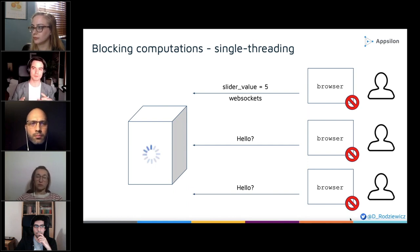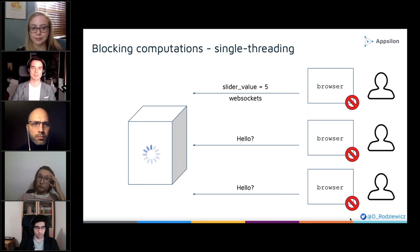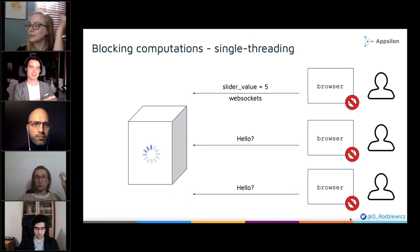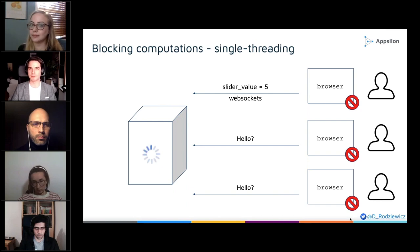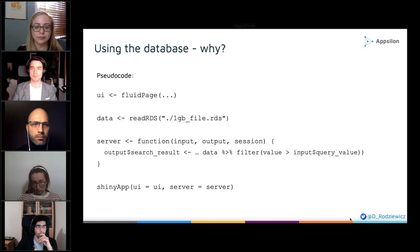To solve this problem you can use multiple approaches: extract computations to the database, use Shiny Promises — a great package by Joe Chang that moves computations to a completely new process, keeping Shiny free — use Shiny Worker (our package for similar computations), or move computations to JavaScript on the front end. The second big problem I see is applications that load a lot of data into memory to run.